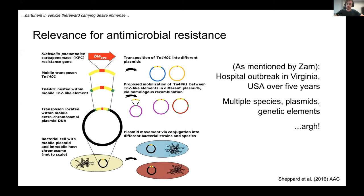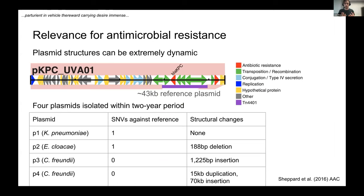So Zam mentioned this paper, which involved a hospital outbreak in the hospital in America, over five years, multiple species, multiple plasmids, genetic elements moving this gene around. It's a nightmare. And it's a really fantastic paper. I really recommend if you haven't read it, do so because you'll learn a huge amount. That was a groundbreaking paper in exploration of this genetic diversity in bacterial genomes.